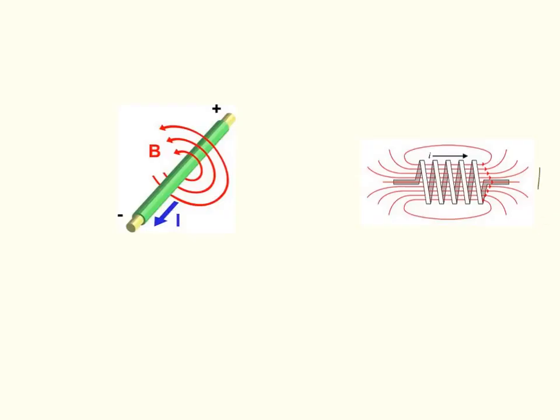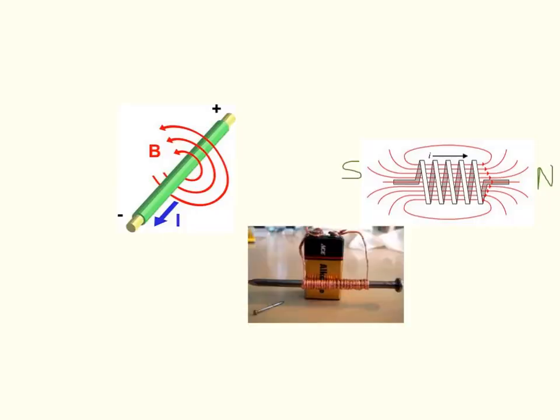This becomes a magnet with a north pole here and a south pole here. To create an even better electromagnet, we just need to put an iron nail through the middle of that coil, and it will become a much stronger electromagnet.